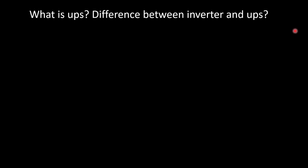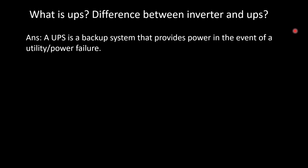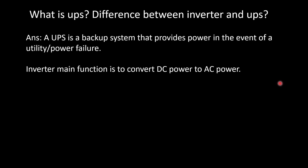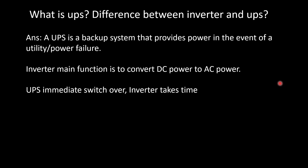What is UPS and what is the difference between an inverter and UPS? UPS is a backup system that provides power in the event of a utility or power failure. An inverter's main function is to convert DC power to AC power. The main difference: UPS immediately switches over — in case of power failure, the supply is uninterrupted with no blinking of lights. An inverter takes time to switch over, so sensitive equipment may turn off and restart. That is the main difference you can answer to an interviewer.